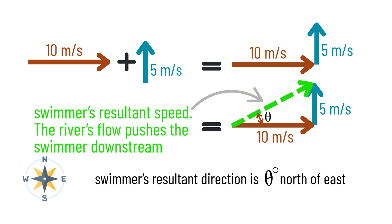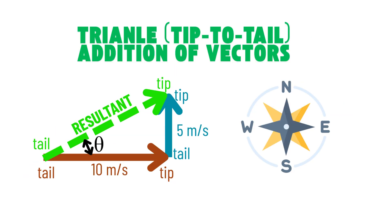Now let's finish the picture. Take your two arrows — the swimmer's eastward arrow and the river's northward arrow — and connect them. Draw a new arrow from the tail of the first vector to the tip of the second vector. Make this arrow green so it stands out. This new arrow is called the resultant — it shows the swimmer's actual speed and direction. Finally, mark the angle between the resultant and the east direction as theta. Here's a clearer picture that shows the resultant arrow along with its magnitude and direction.